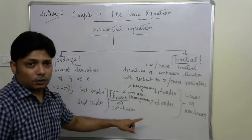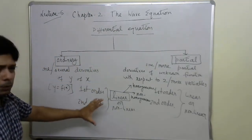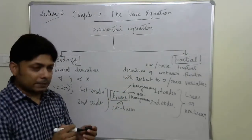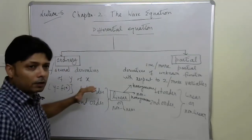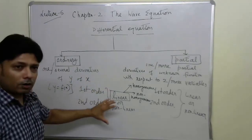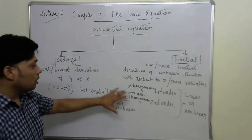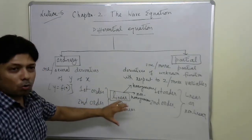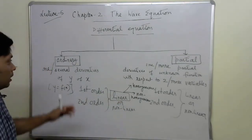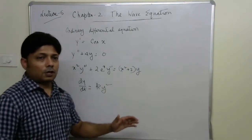A linear ordinary differential equation can also be classified into two types: homogeneous and non-homogeneous. This will be clearer when we look at specific examples of first and second order, and homogeneous or non-homogeneous linear differential equations.